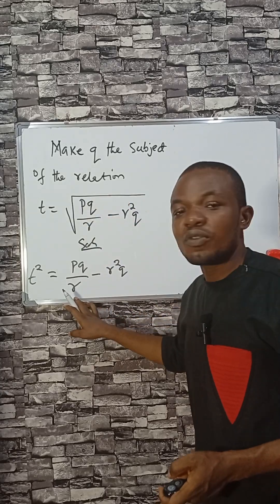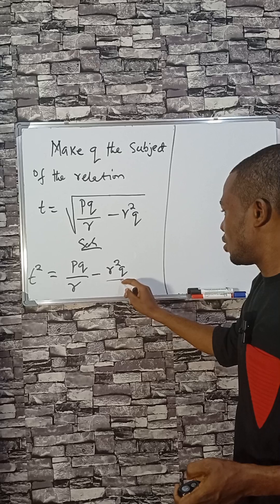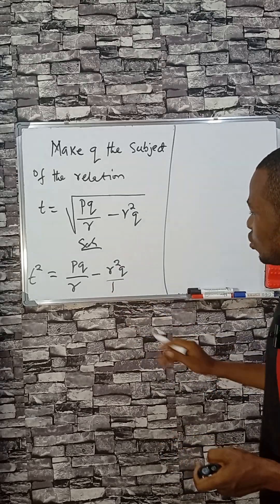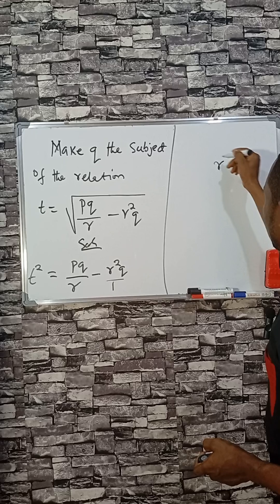From here we are going to find the LCM. The LCM here, don't forget that this is divided by one, so the LCM here is r. We draw a line as usual.